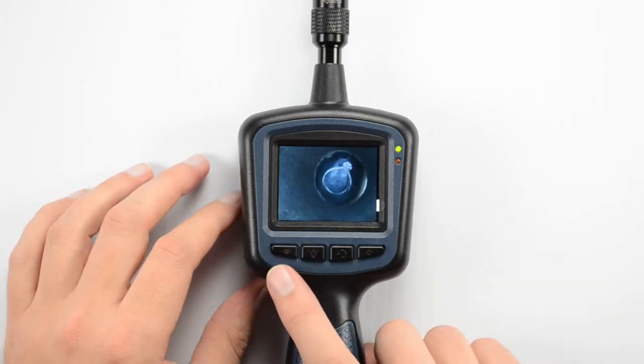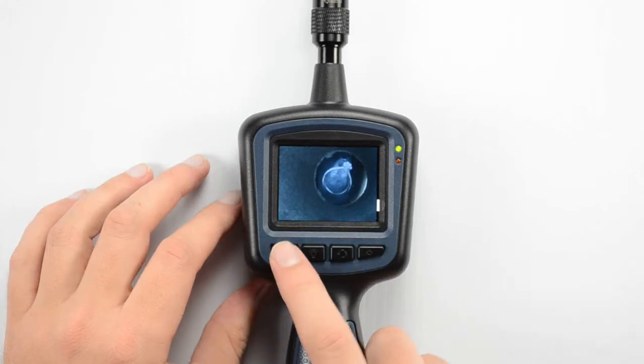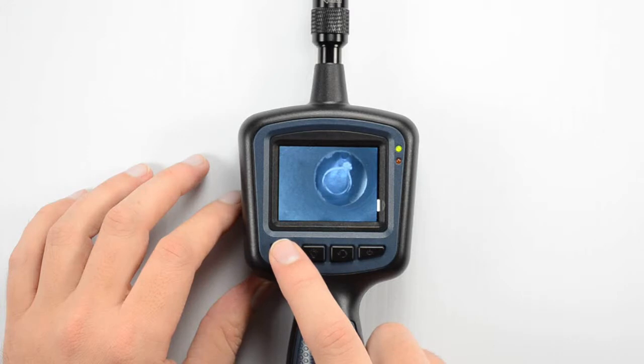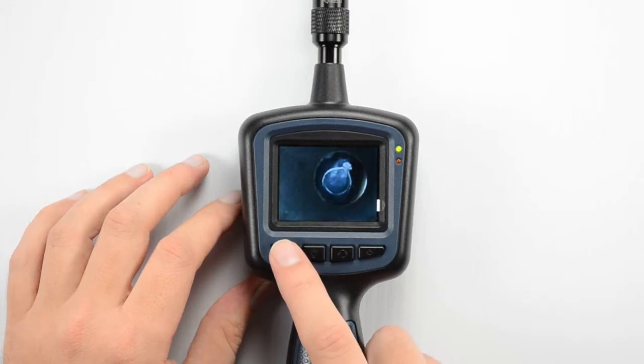First one over here on the far left, this is going to be our contrast adjustment. So we can just click this and as you can see we get a little more detail in the picture. You can just press this to adjust it to your liking.